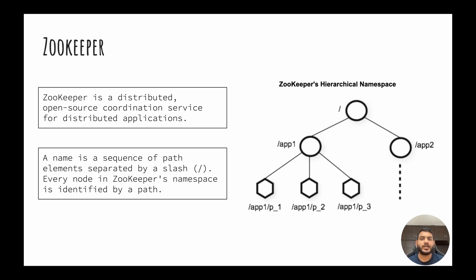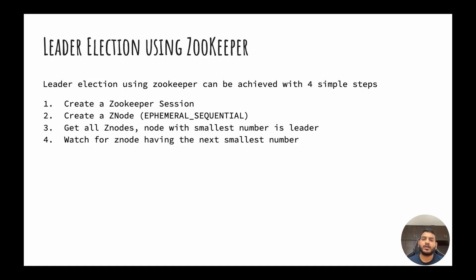Zookeeper is a distributed key-value store and keys in Zookeeper form a hierarchical namespace. It looks like a directory path, and each key stores some value. This key-value pair is represented as a Z node in the Zookeeper system. To implement a leader election process, each node that wants to contend for leadership needs to follow four steps.